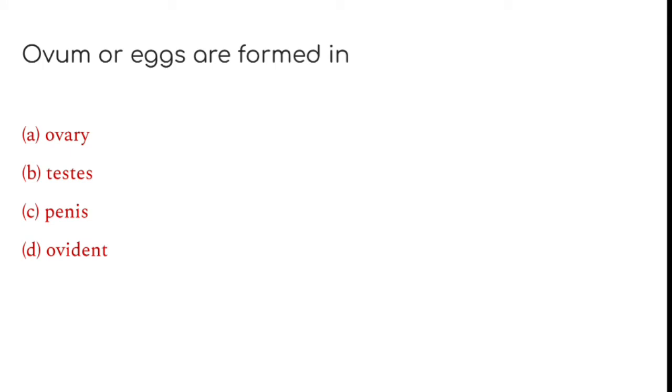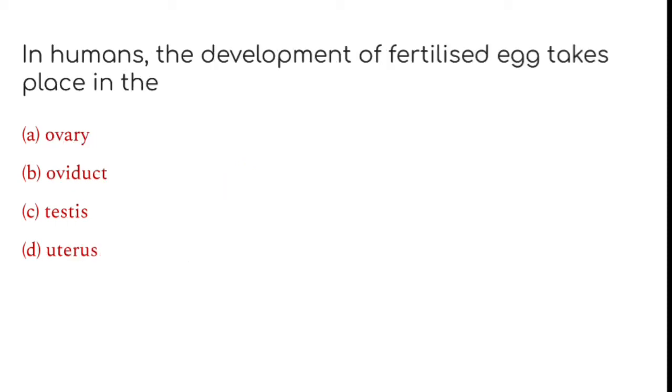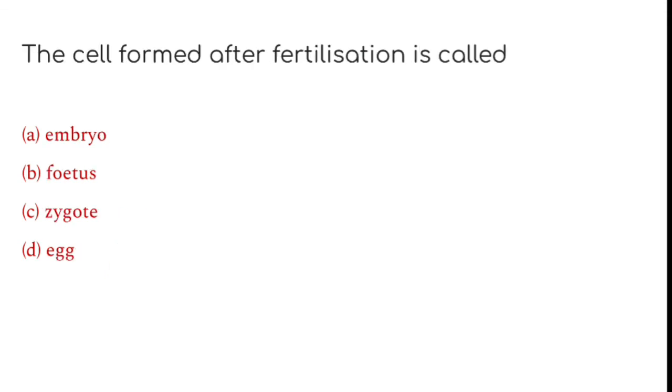Ovum or eggs are formed in ovary. Internal fertilization takes place inside female body. In humans, the development of fertilized eggs takes place in the uterus. The cell formed after fertilization is called zygote.